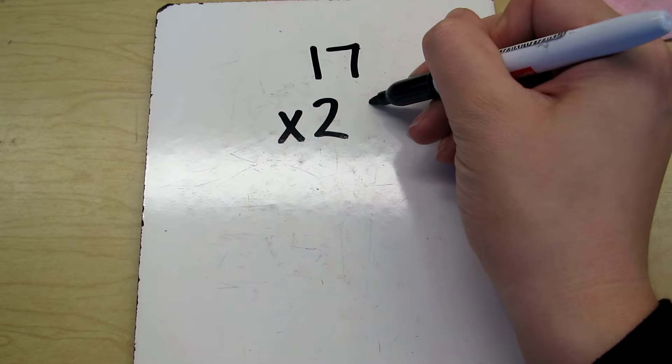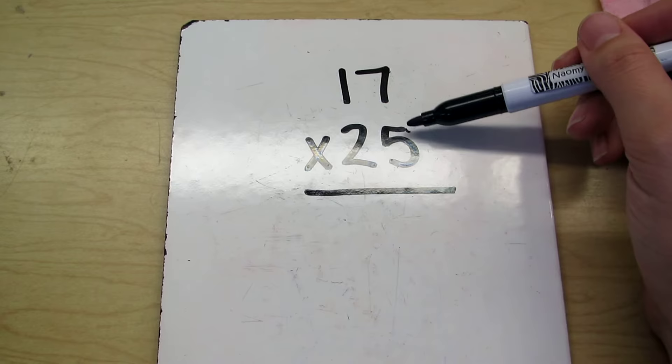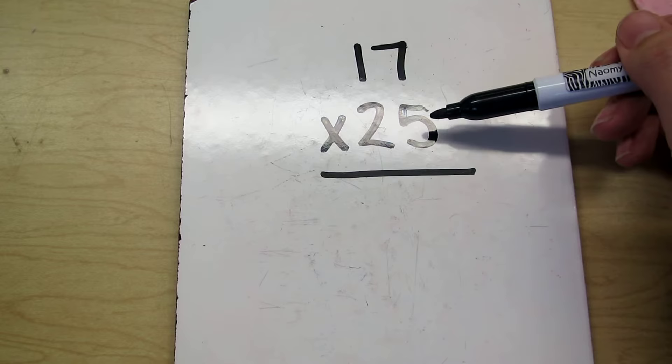Okay, so like we talked about in class here, what we're going to start with is the number in our ones place. So the number in our ones place on the bottom here is the 5 in 25. So we're going to start by multiplying those numbers first.